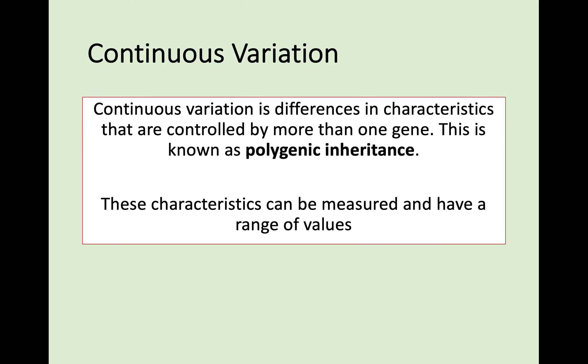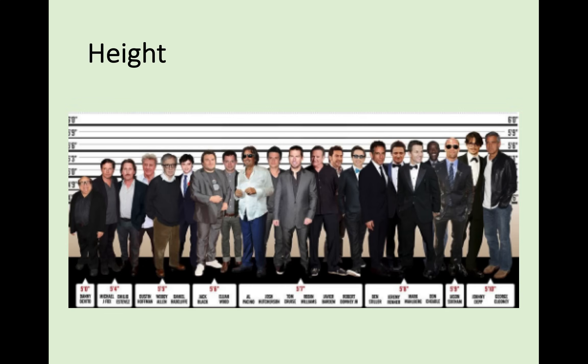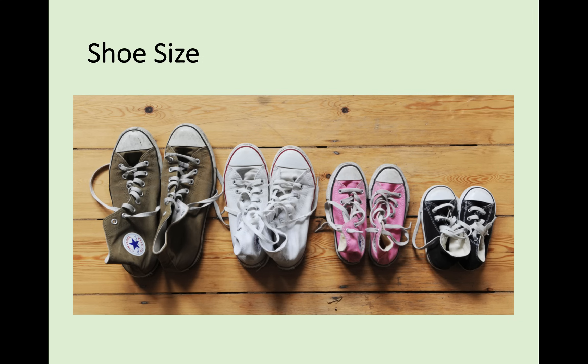Moving on to the next type of variation: continuous. Continuous variation involves physical differences that are controlled by more than one gene, so this is known as polygenic inheritance — polygenic just meaning many genes. These characteristics can't be divided up into distinct groups; they can be measured and have a range of values. For example, height — there's a continuous range going from small to tall controlled by many genes. Anything that you can measure, such as shoe size or foot length, would be a form of continuous variation.